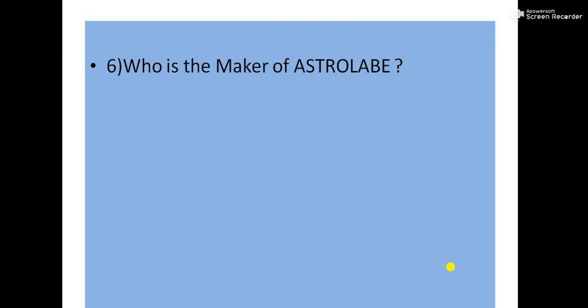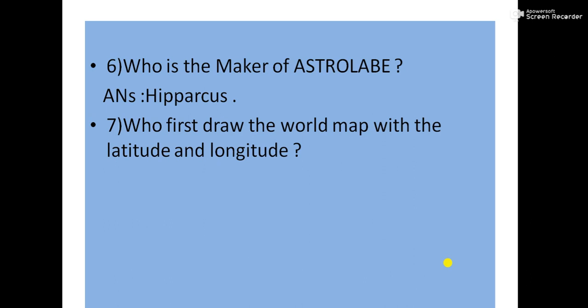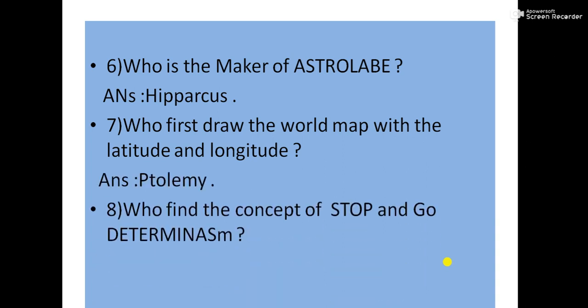Who is the maker of astrolabe? The maker of astrolabe was Hipparchus. Who first drew the map with the latitude and longitude? The answer is Ptolemy. Who found the concept of stop and go determinism? The answer is G. Taylor.